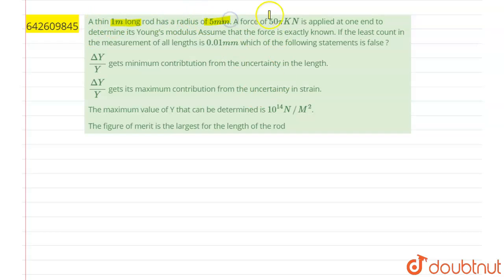A thin one meter long rod has radius of 5 mm. A force of 50 kilonewton is applied at one end to determine Young's modulus. Assume that force is exactly known. If least count in the measurement of all heights is 0.01 mm, which of following statement is false? So out of four options we have to find which one is wrong.